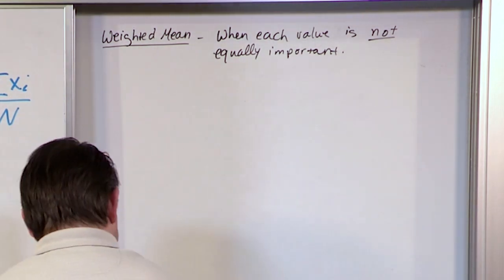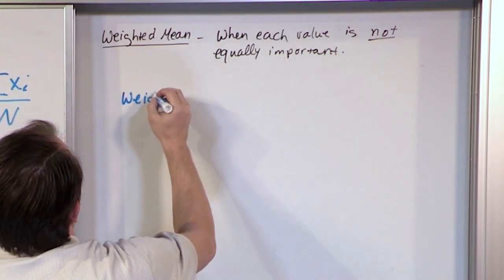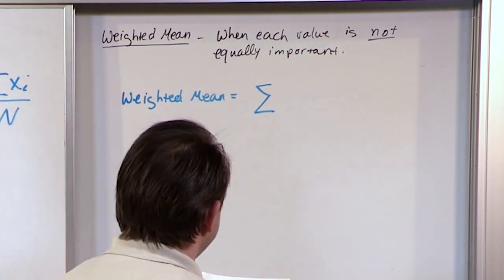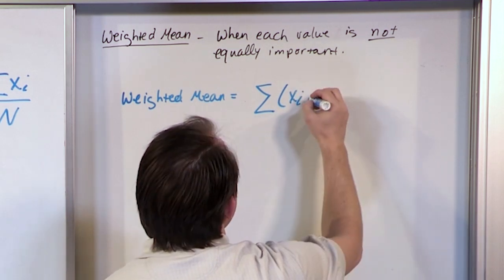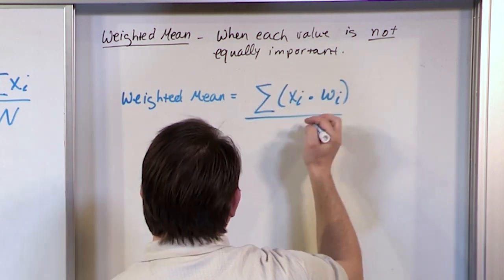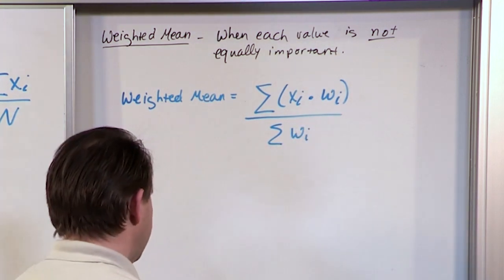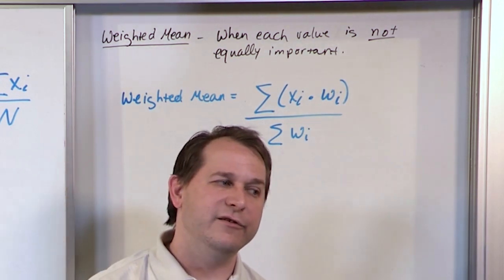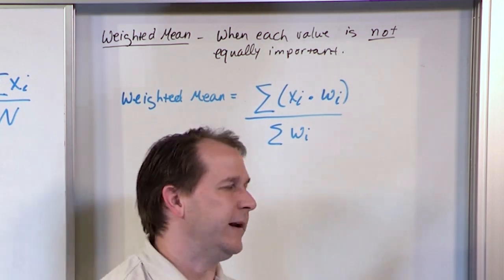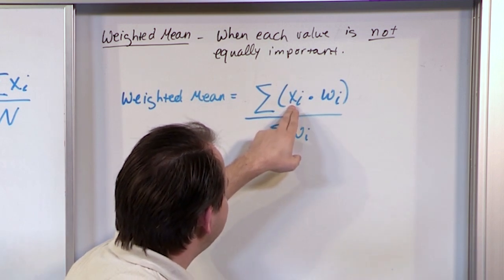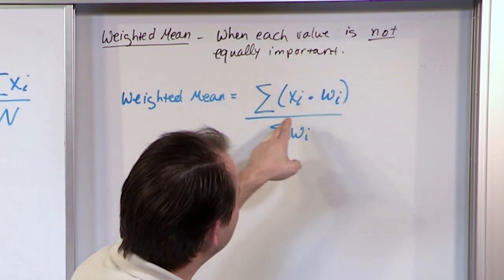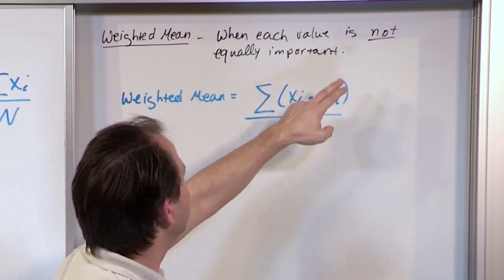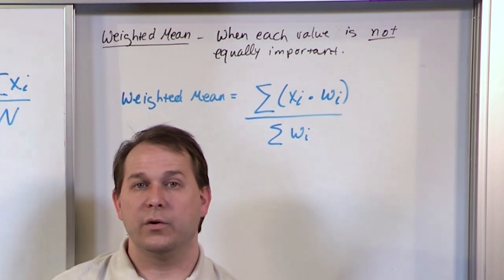The way you calculate a weighted mean: it is equal to the sum — when you see sigma, think addition — of the x values multiplied by their weights. You add all those products together and divide by the sum of the weights. Normally for a regular mean, we add up the values and divide by the number of values, assuming everything is equally weighted. Here, things are not equally weighted, so we multiply each grade by its weight, sum those products, and divide by the sum of all weights.